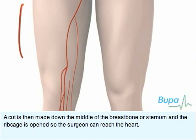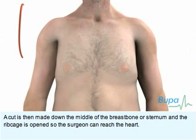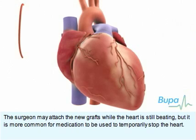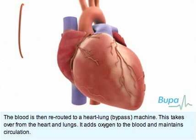A cut is then made down the middle of the breastbone or sternum, and the ribcage is opened so the surgeon can reach the heart. The surgeon may attach the new grafts while the heart is still beating, but it's more common for medication to be used to temporarily stop the heart. The blood is then rerouted to a heart-lung bypass machine, which takes over from the heart and lungs, adding oxygen to the blood and maintaining circulation.